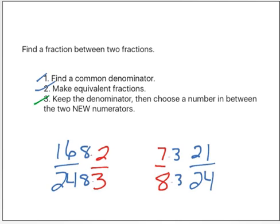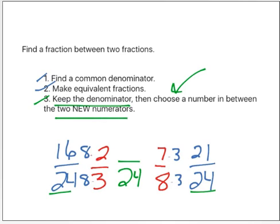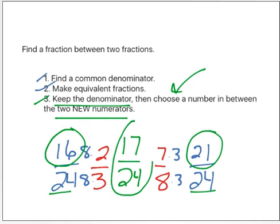Now I'm going to do step three. Keep the denominator — I'm going to keep the twenty-four. I need to choose a number in between my two new numerators. So a number between sixteen and twenty-one. I have lots of choices: I could choose seventeen, eighteen, nineteen, or twenty. I feel like choosing seventeen. That is my answer.